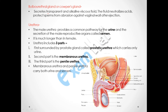The next topic is the bulbourethral gland, also known as Cowper's gland. It secretes a transparent, alkaline, viscous fluid. The fluid neutralizes acid and protects the sperm from abrasion against the vaginal wall after ejaculation. It joins the urethra and adds a small amount of its secretion to the semen.